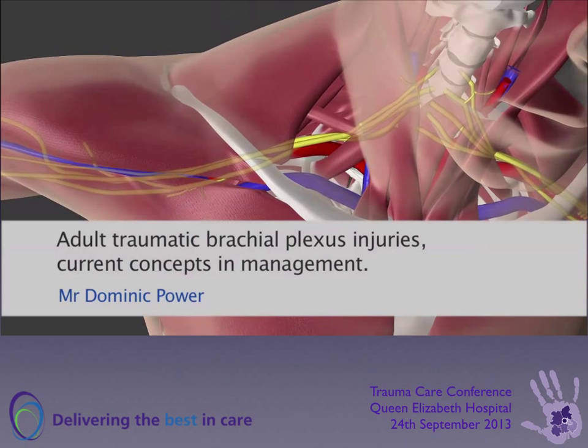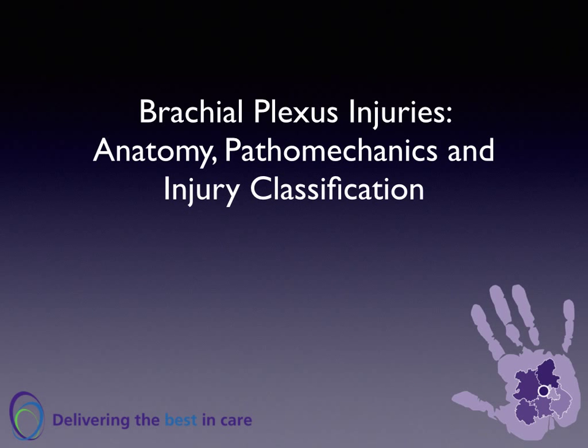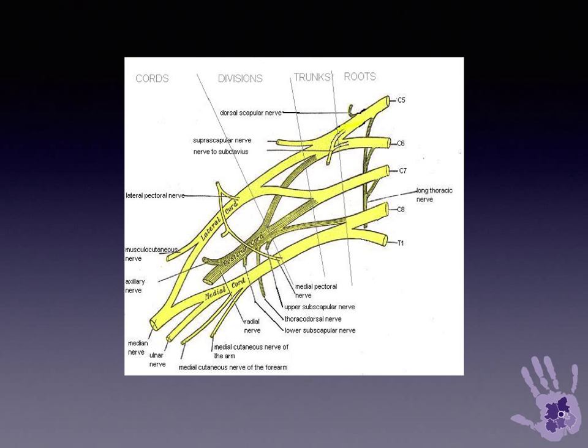This first talk is about brachial plexus injury: the anatomy, the pathomechanics of injury, and the injury classification. It's important to understand this network of nerves and the typical anatomy.